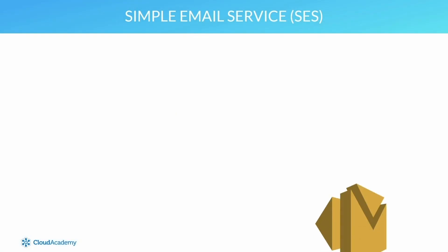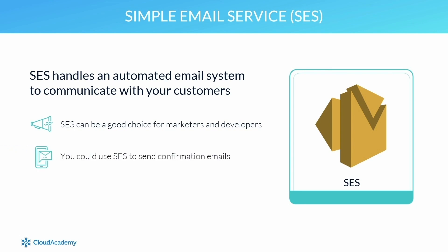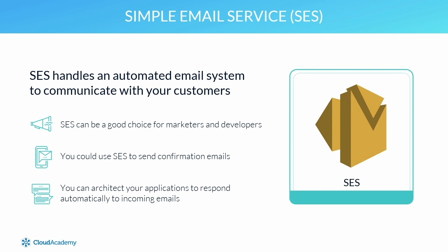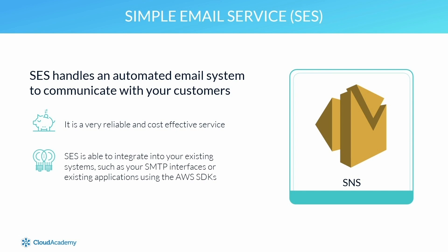The SES service makes it possible to use AWS infrastructure and email servers to handle an automated email system to communicate with your customers, making it a good choice for marketers and developers. For example, you could use SES to send a confirmation email to customers notifying them of their new account details, or an email confirmation detailing their online order. When receiving email, you can architect your applications to respond automatically to incoming emails, such as requests to unsubscribe from a newsletter, or to automatically create support tickets for your team. It is a reliable and cost-effective service that integrates into existing systems via SMTP interfaces or the AWS SDKs.